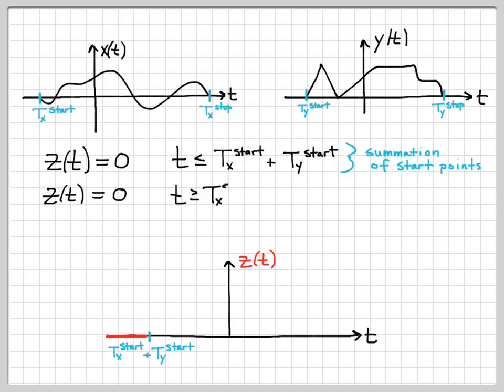We also can show easily that z of t is equal to 0 for all times greater than t sub x stop plus t sub y stop. This is just a summation of these stop points. So you just look at x of t and see where it ends. It ends at t sub x stop. You look at y of t and see where it ends. It ends at t sub y stop. If you add those two together, you know that z of t will be 0 for all times greater than or equal to that.